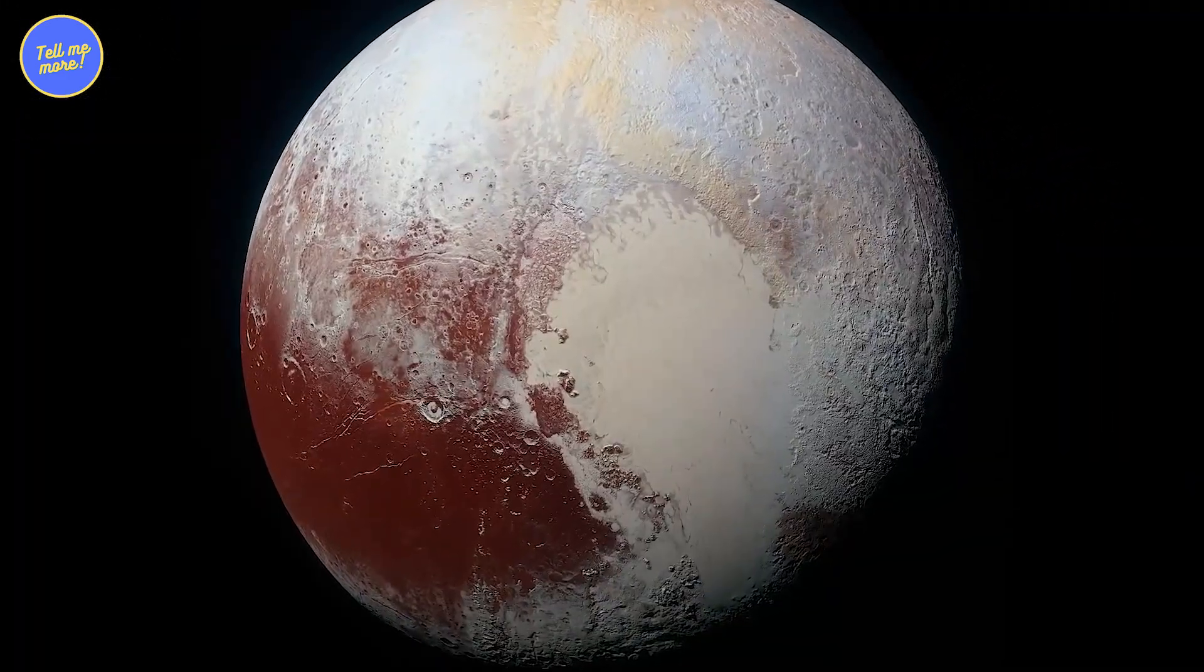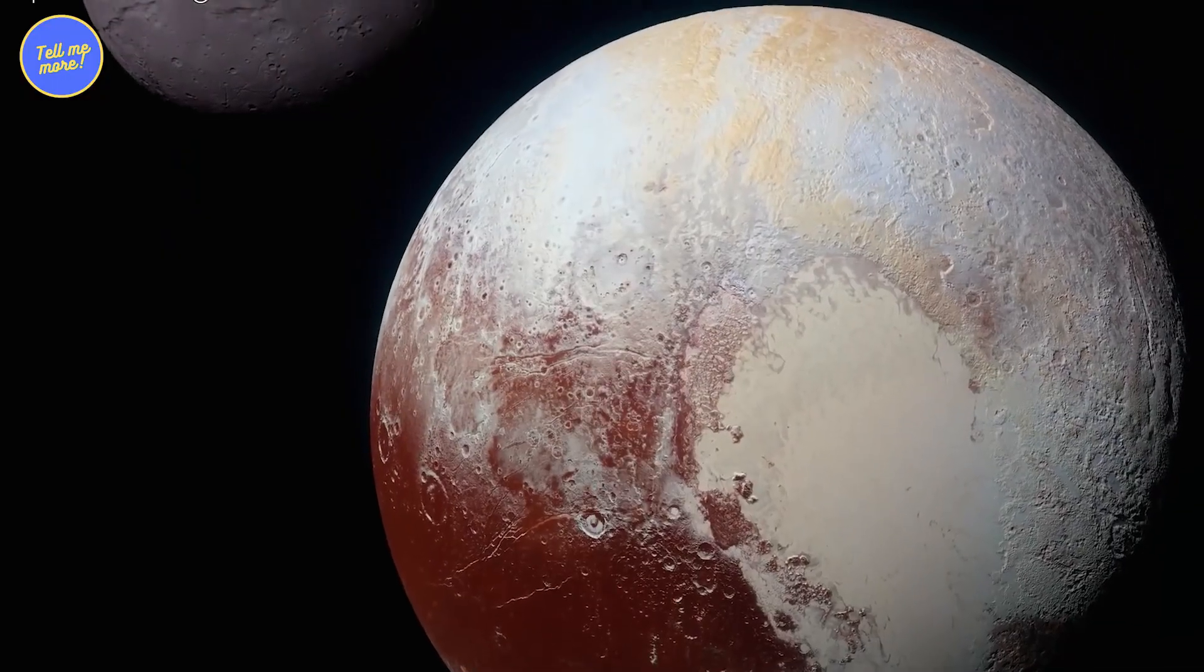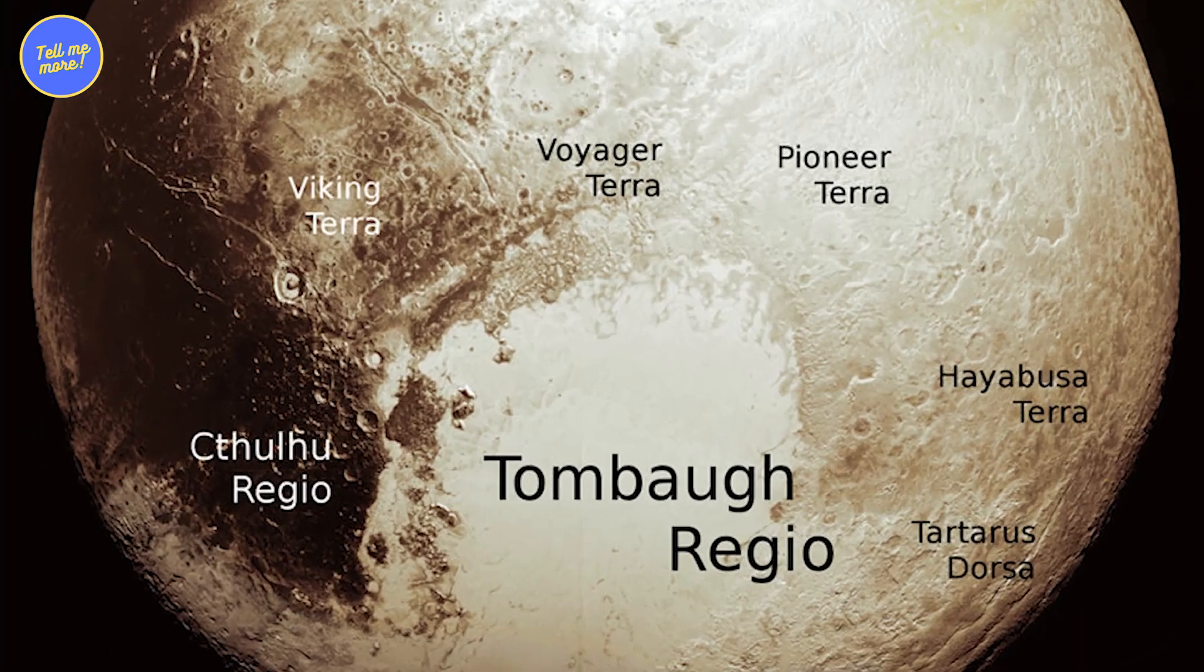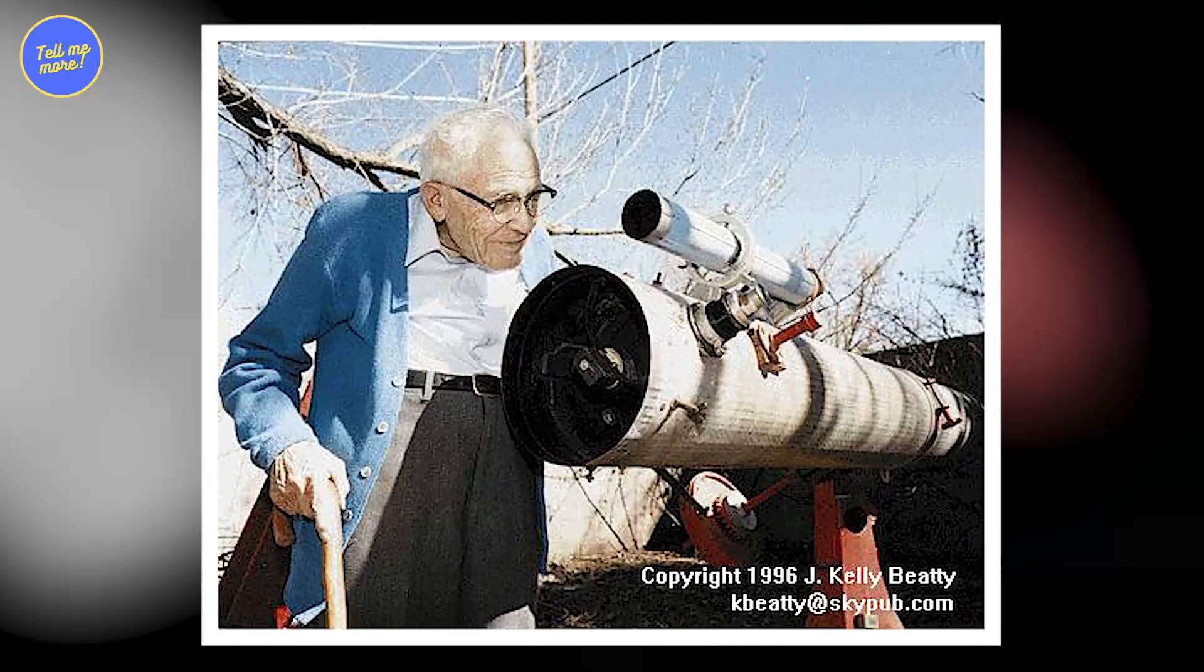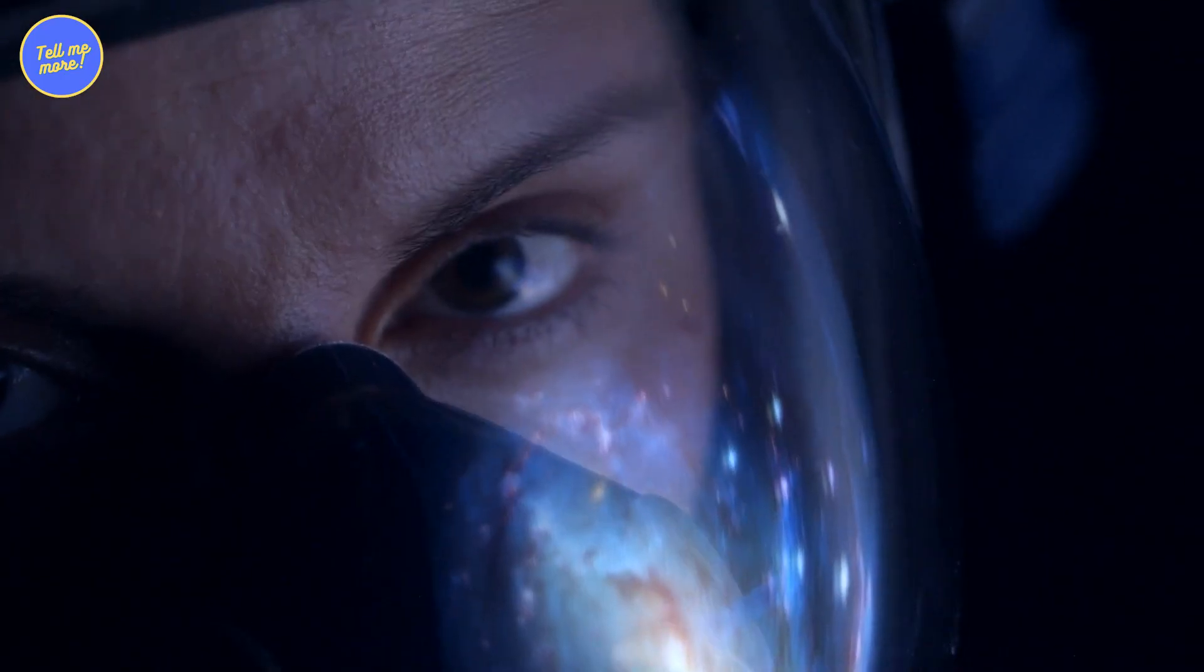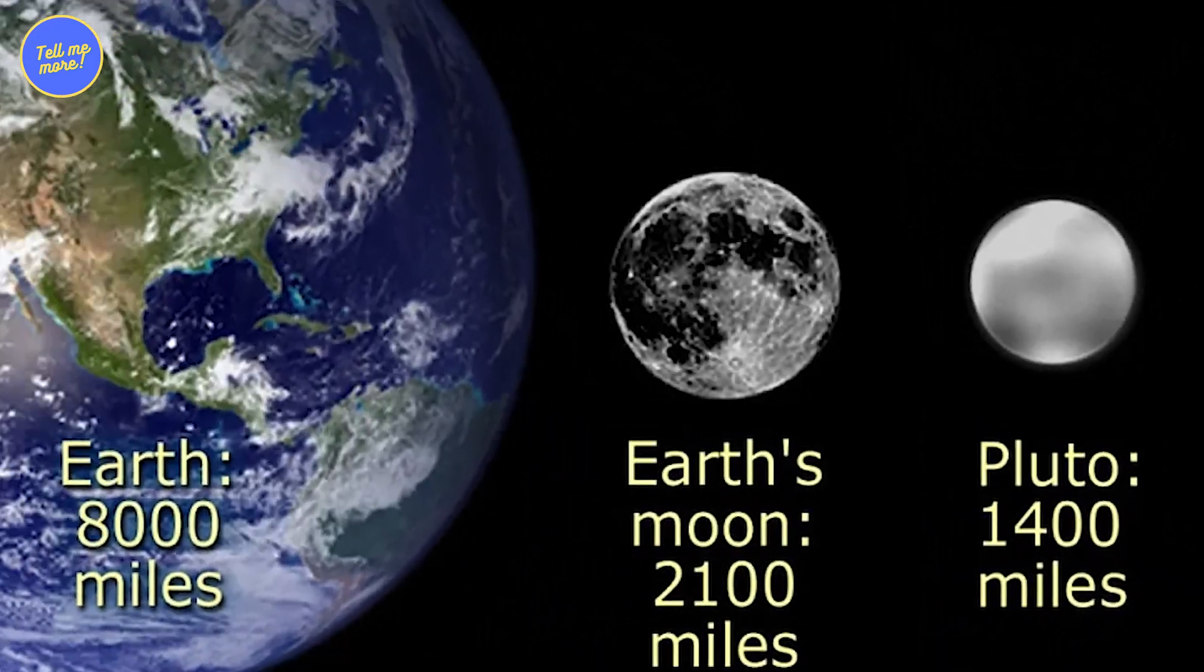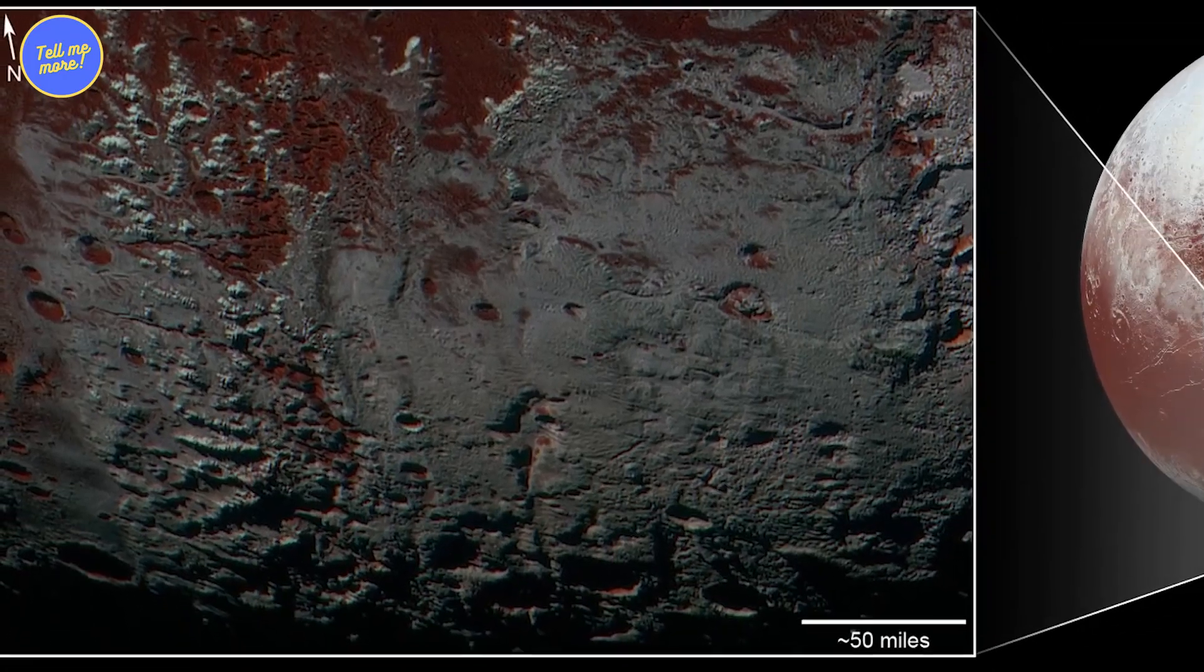And guess what? Pluto wasn't just a sad, distant ice ball. It showed off a heart-shaped region called Tombaugh Regio, named after Clyde Tombaugh, the guy who discovered Pluto in the first place. This icy heart had scientists swooning and rethinking everything. It turns out, Pluto might be small, but its secrets are as big as its former planetary status.